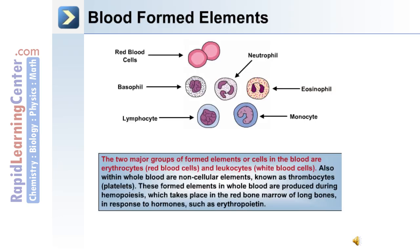There are two major groups of formed elements, or cells, in whole blood: erythrocytes, or red blood cells, and leukocytes, or white blood cells. Within blood are non-cellular elements known as thrombocytes, or platelets. These formed elements in whole blood are produced during hemopoiesis, which takes place in red bone marrow of long bones, in response to hormones such as erythropoietin.